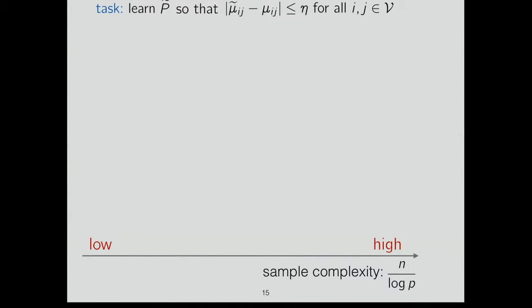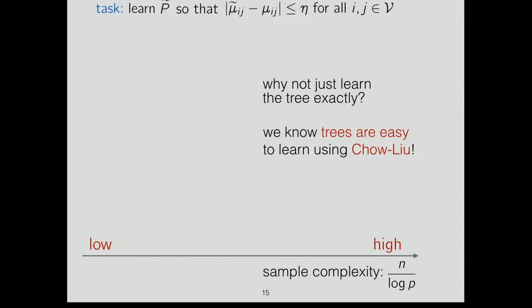We'll embark on a quest to find the right answer, plotting progress along a sample-complexity axis normalized by log p. Let's start with: why not just learn the tree exactly using the Chow-Liu algorithm? Trees can be learned easily when all nodes are fully observed.